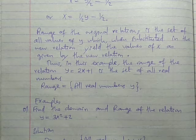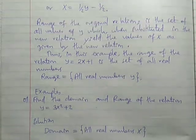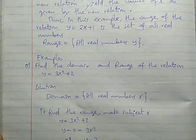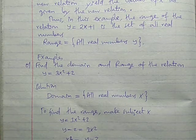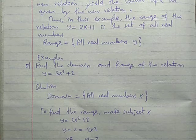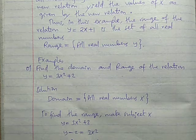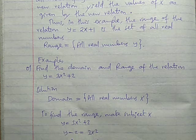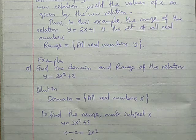Kwa hiyo, domain and range for a linear equation like that are both all real numbers. But in a case where you are given an equation with a square, like Y = 3X² + 2, the domain is all real numbers X since any X gives a value. But to get the range, you need to make X the subject — that uses the form 2 concept of making subject.